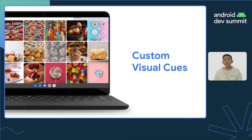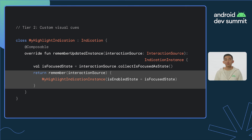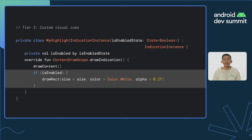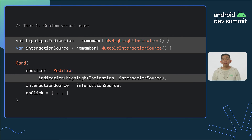Sometimes developers need to go beyond basic modifications to meet the desired visual specs for their app. When this happens, developers can implement custom visual cues. You can define custom visual cues by first creating a custom indication class named MyHighlightIndication. Within this class, we've overwritten the rememberUpdatedInstance function where we send a remembered state of the MyHighlightIndication instance. MyHighlightIndicationInstance is a custom indication instance class that overrides ContentDrawScope's drawIndication function, which is responsible for drawing the actual outline of our custom visual cue. We can then apply it to an object using the indication modifier, along with a mutable interaction source object which controls how the focus indicator looks in various states.